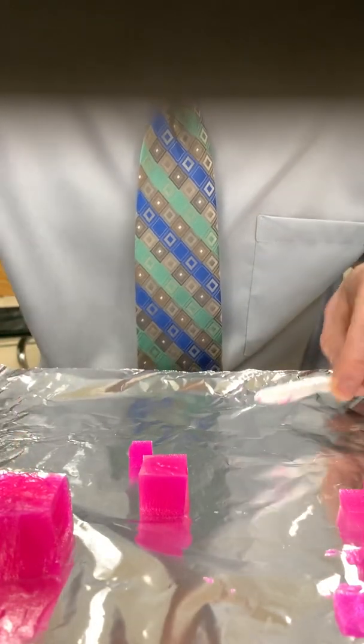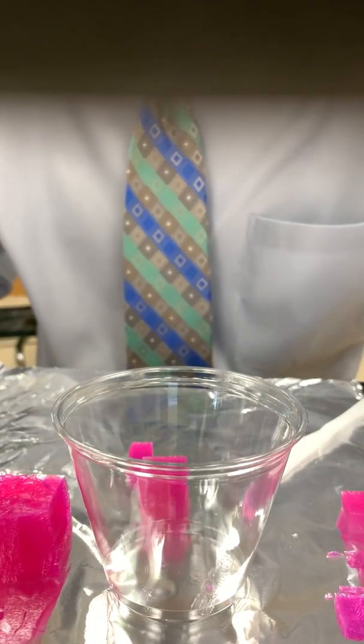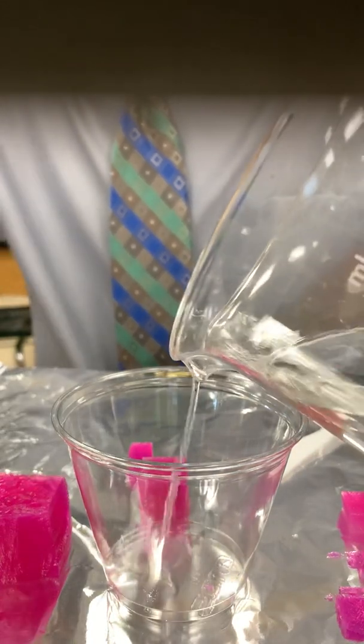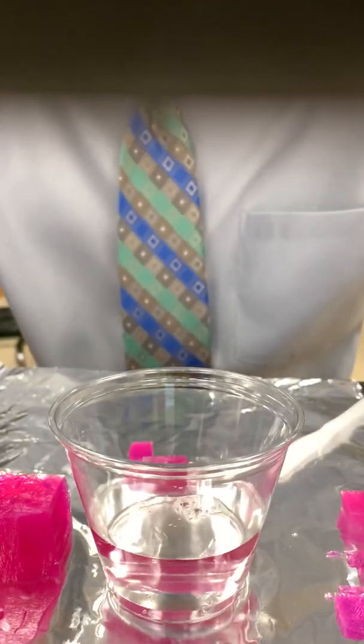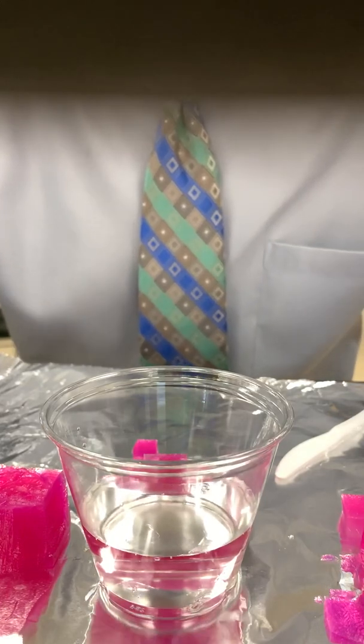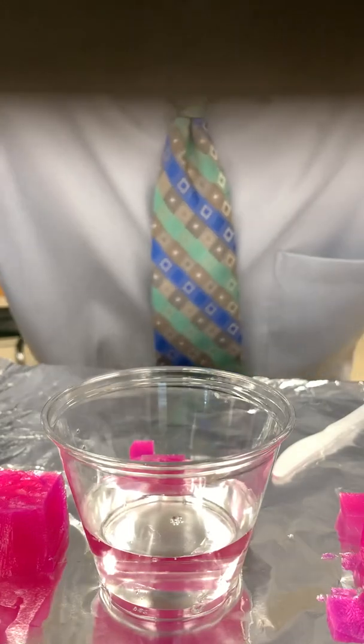So those are our three blocks. Now we're going to take our cup and put hydrochloric acid in there, a 0.3 molar solution. Just enough so that when submerged, the cubes are in the hydrochloric acid solution.